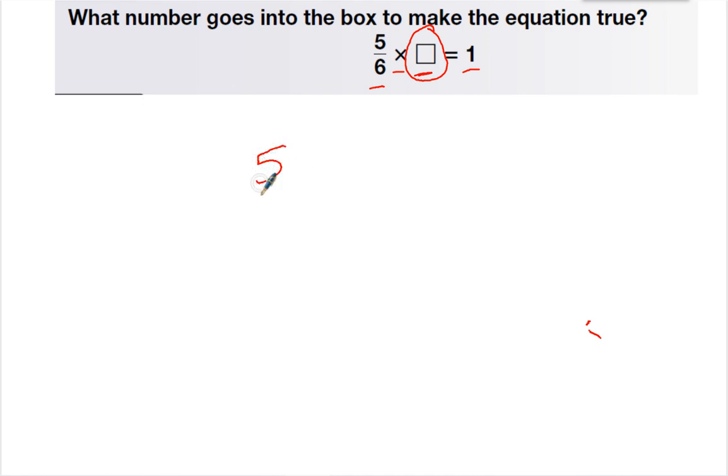So we have 5 sixths times something equals 1. And remember, to find the reciprocal, we just have to switch the two numbers. So my answer is going to be 6 fifths. We just flip those around.